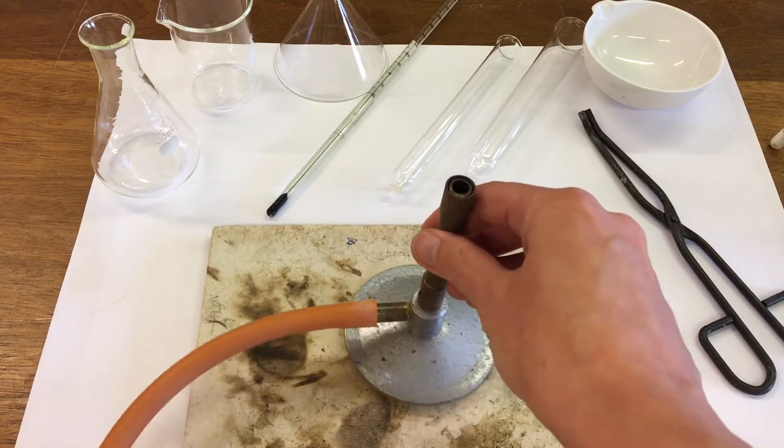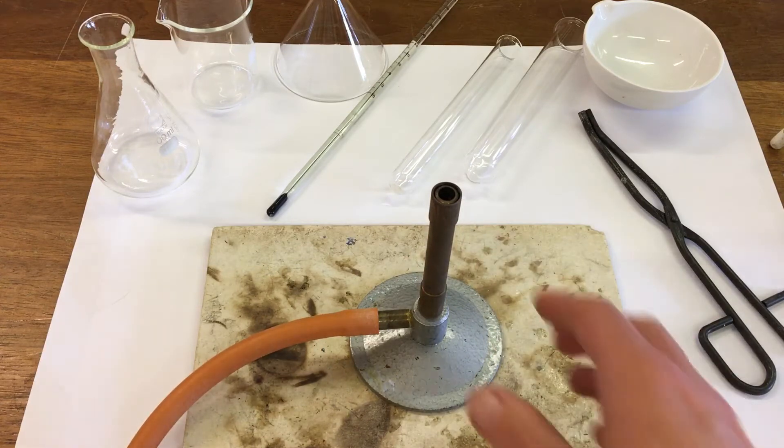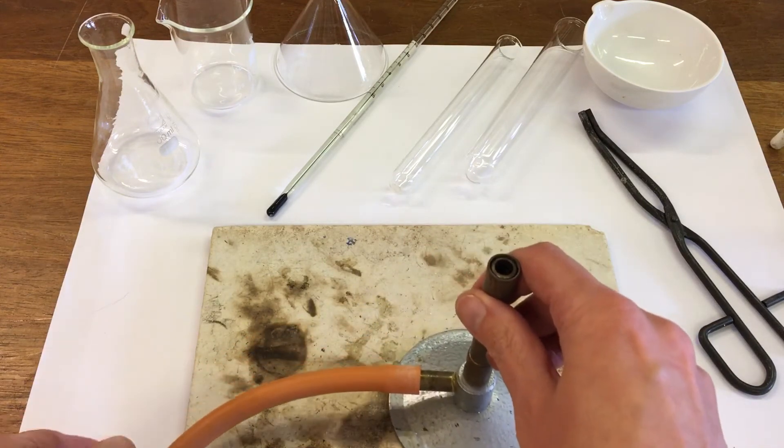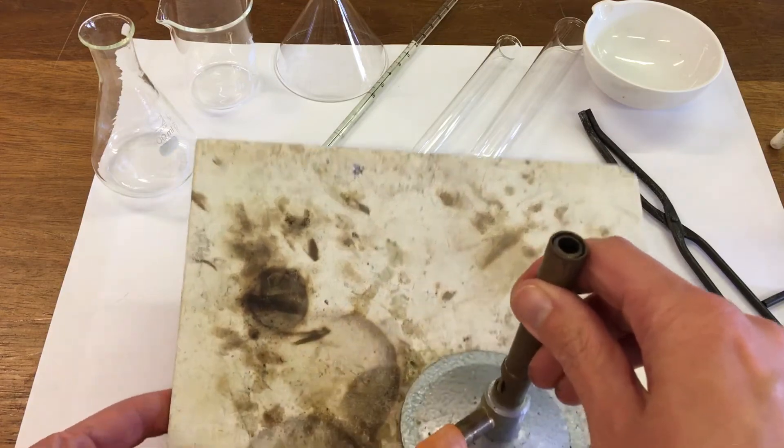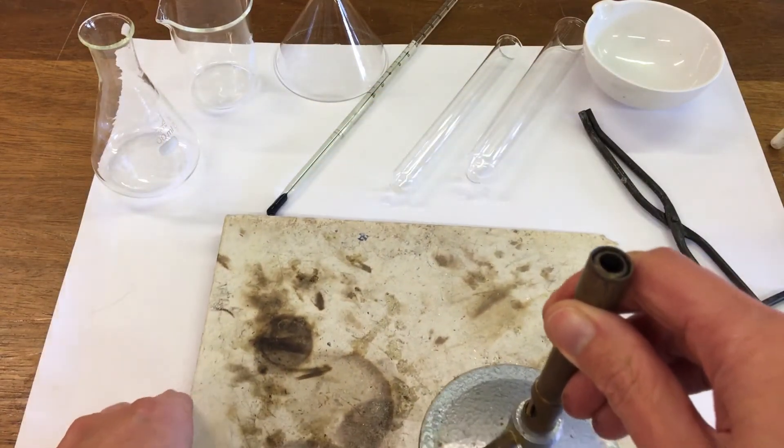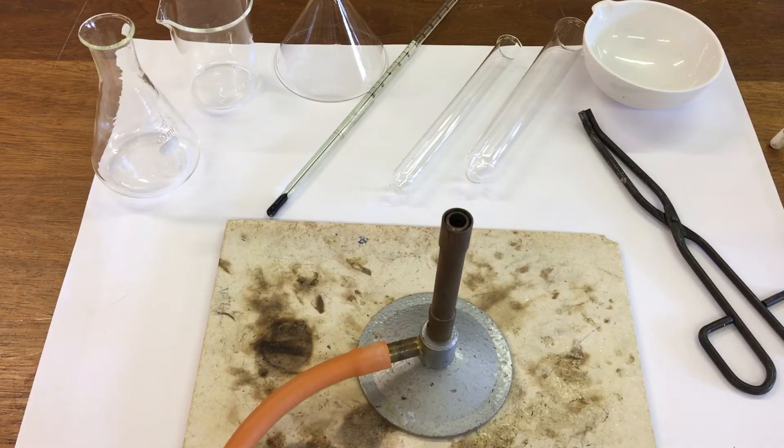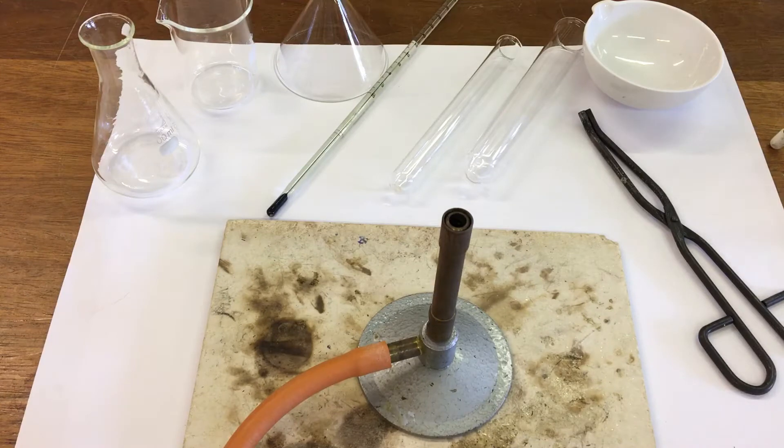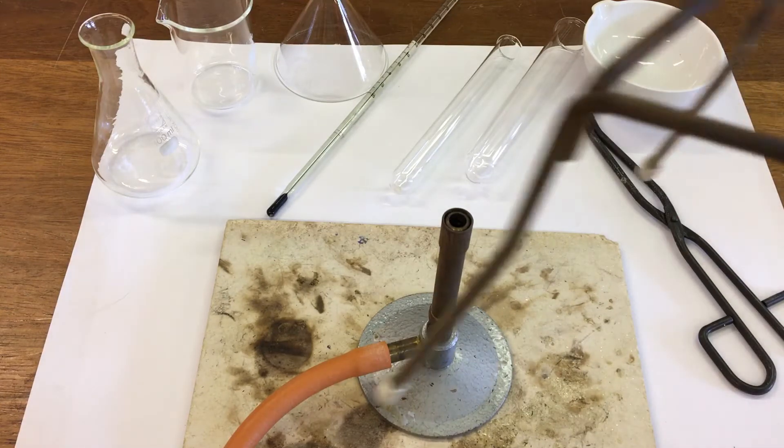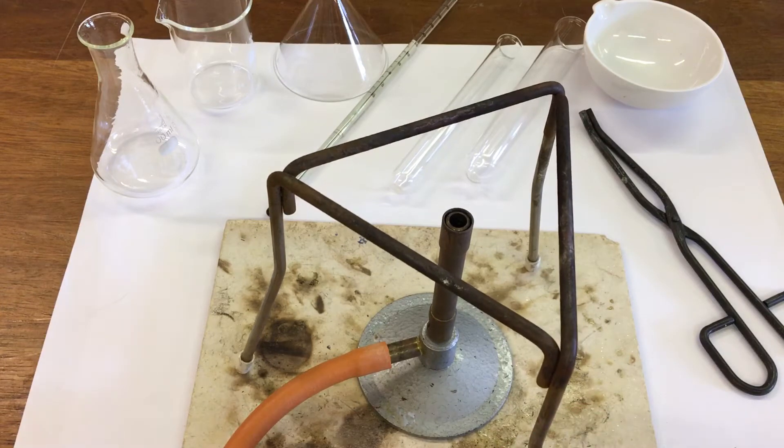That's the Bunsen burner. Our second item is the heatproof mat which the Bunsen burner sits on. That's a heatproof mat here. And next we have a tripod. The tripod sits over the Bunsen burner, so this is the tripod.